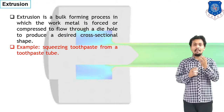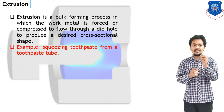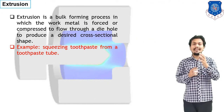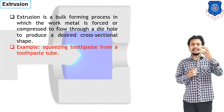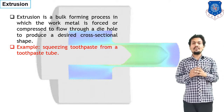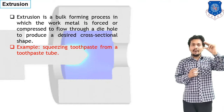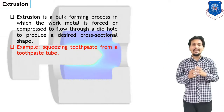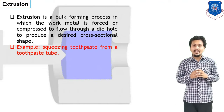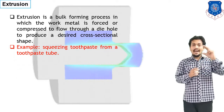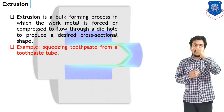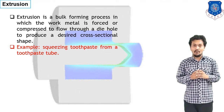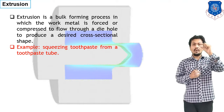The best example of extrusion process is toothpaste coming out from the nozzle. In the toothpaste tube, it has a large diameter body in which the toothpaste is filled. When we give force — when we push the body of the toothpaste — it comes out from the small diameter nozzle. So the paste comes out according to the shape of the small diameter nozzle. This is the best example of extrusion.